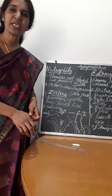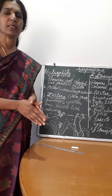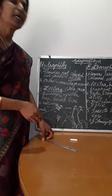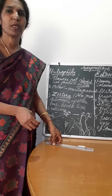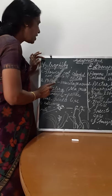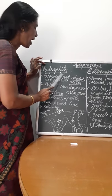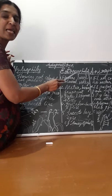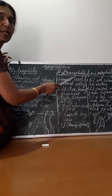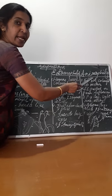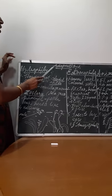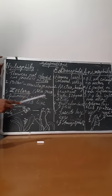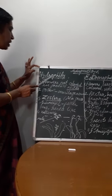You have learnt about pollination and types of pollination. Now, how does pollination take place? There are various agents which help pollination. The agents are wind, water, and insects. If water is the medium, that is hydrophily. If insects are the pollinators, that is entomophily. If wind is the pollinating agent, that is anemophily. So based on pollinating agents, pollination is of three types: hydrophily, entomophily, and anemophily.